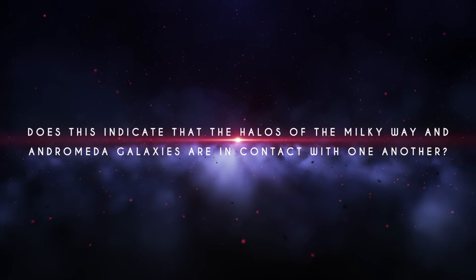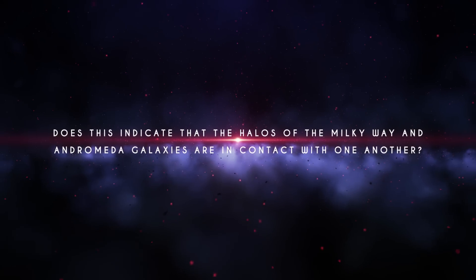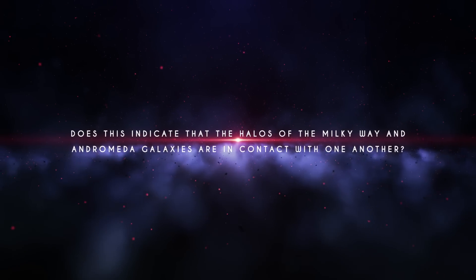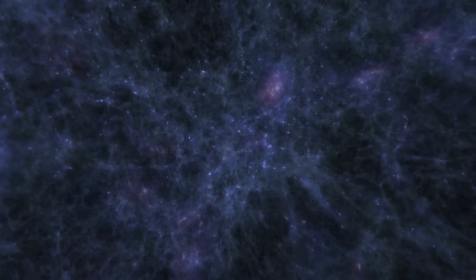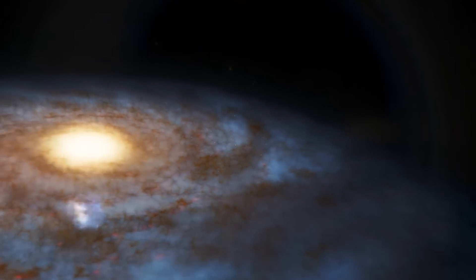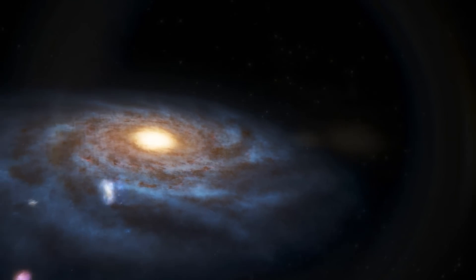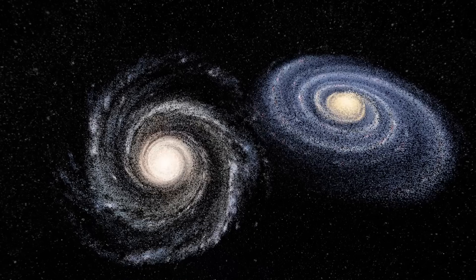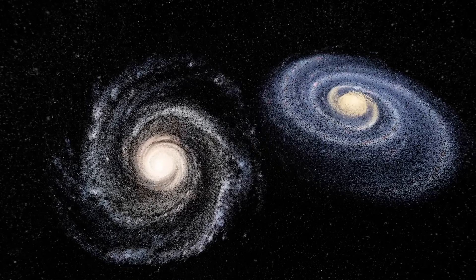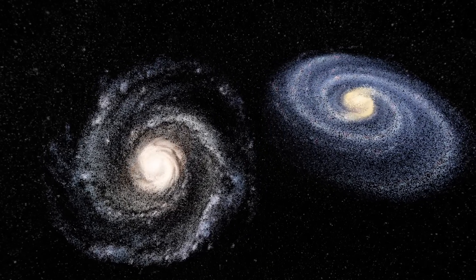Therefore, does this indicate that the halos of the Milky Way and Andromeda Galaxies are in contact with one another? It turns out that we can't simply measure the properties of our galaxy's halo from our vantage point inside the Milky Way. On the other hand, due to the fact that the two galaxies are so comparable to one another in terms of both their size and their appearance, astronomers believe that the halo of the Milky Way would also be similar.